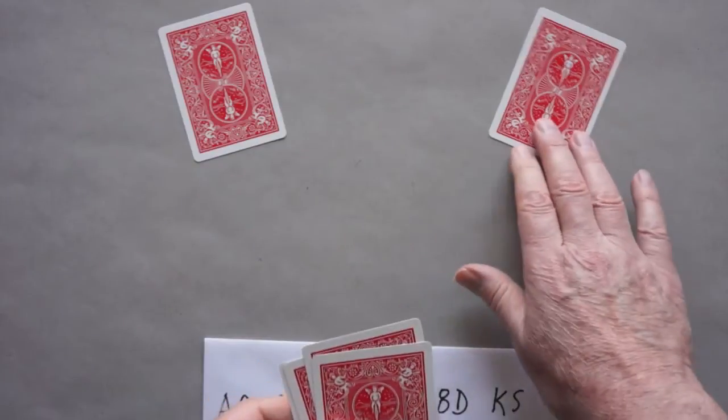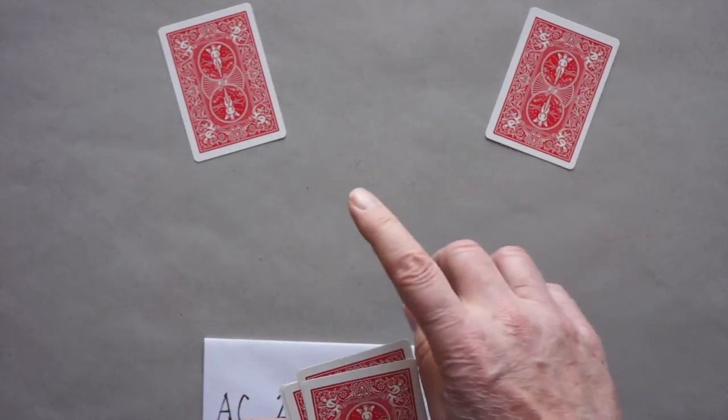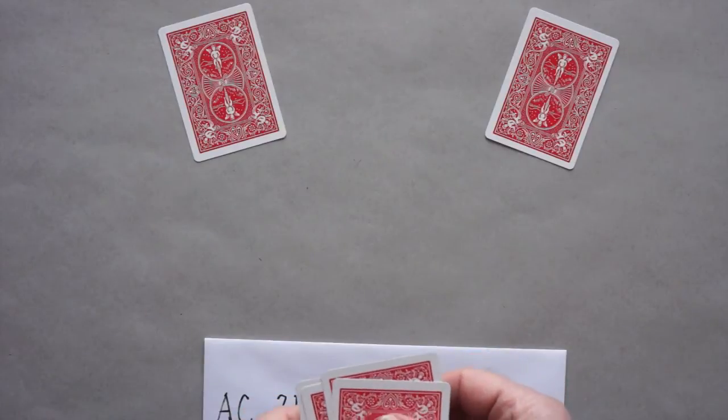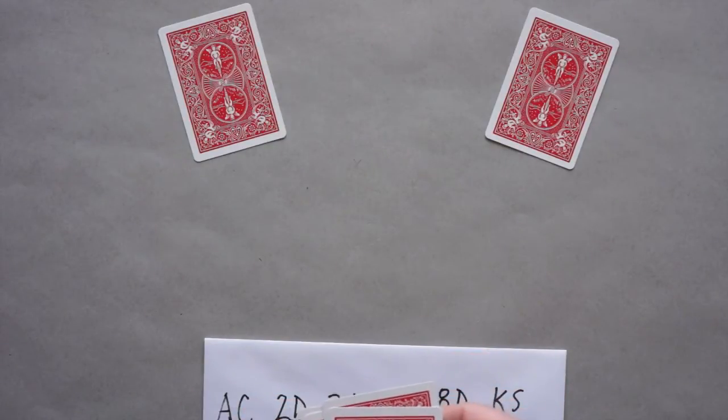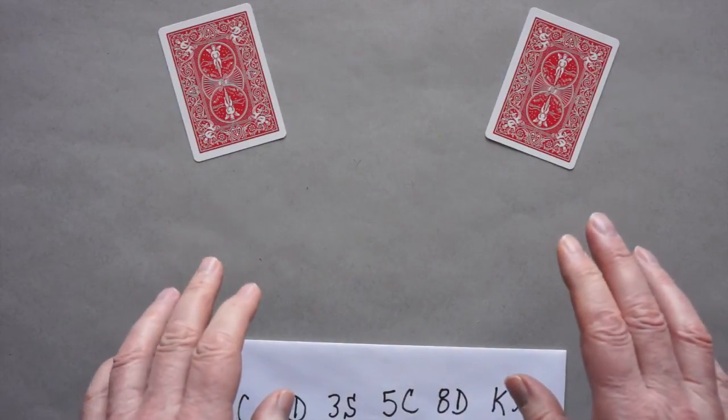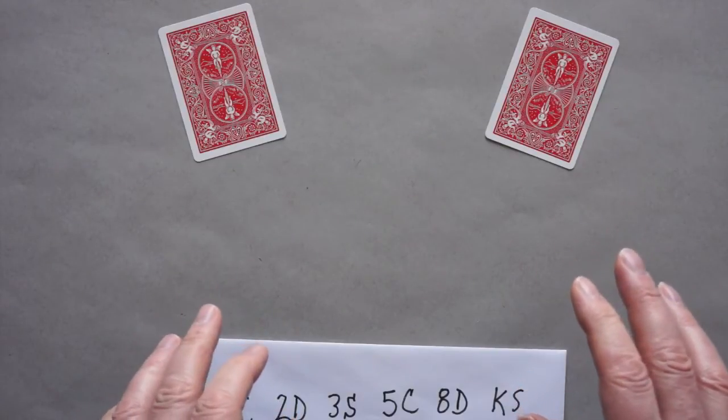And now you say to them, I want you both to remember your cards. Please don't forget your card. If you want to, you can whisper the name of your card to a friend. After you've done that, I would like you both to add up your cards and tell me what the sum of the two cards is. Well, let's say they say 13.